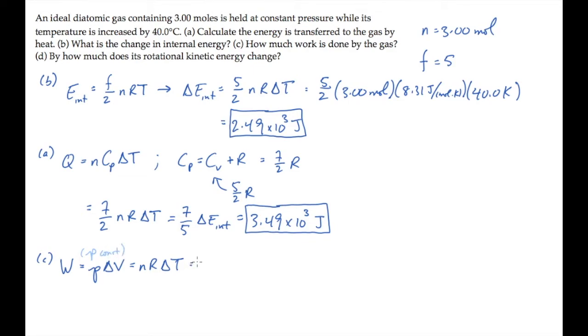You can either substitute values or realize that this is 2/5 the value we calculated in part A. Either way, you get 997 joules.